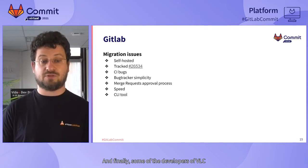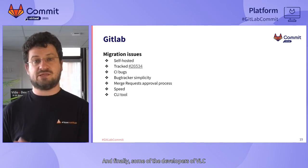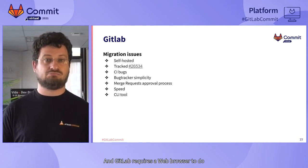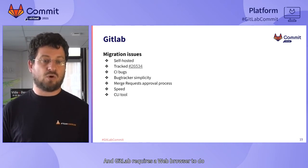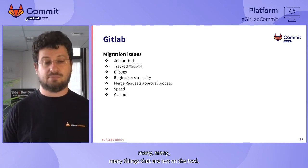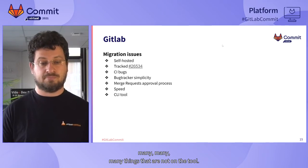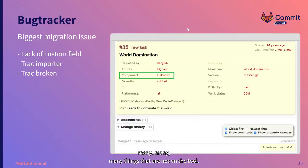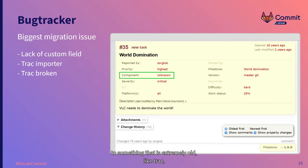We didn't have a solution for that at the moment. And finally, GitLab was still a bit slow on large merge requests. And finally, some of the developers of VLC and FFmpeg do everything on the command line. GitLab requires a web browser to do many, many things that are not available on the CLI tool.